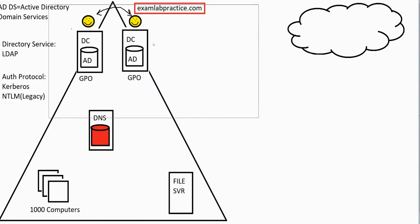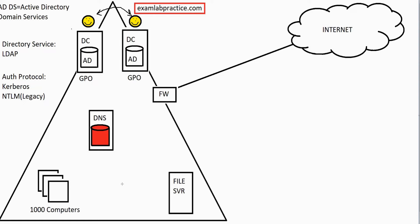Let's throw the internet into the mix. Your company would have an internet connection coming in, and you don't want to leave your internal network exposed, so your company would generally have a firewall. Now we have a secure way for traffic to flow out to the internet, and only things we send out — plus things we specifically allow — can come back through that firewall. This is a traditional domain — the way we've done things for about 20 years.